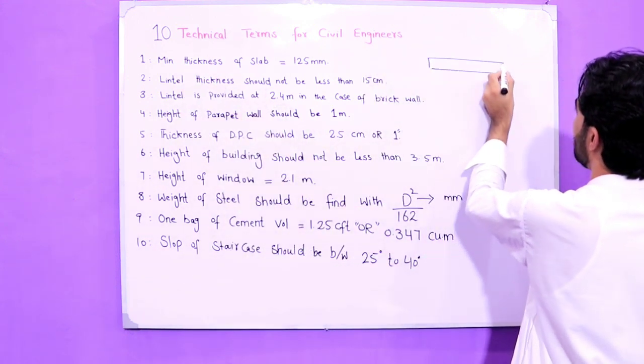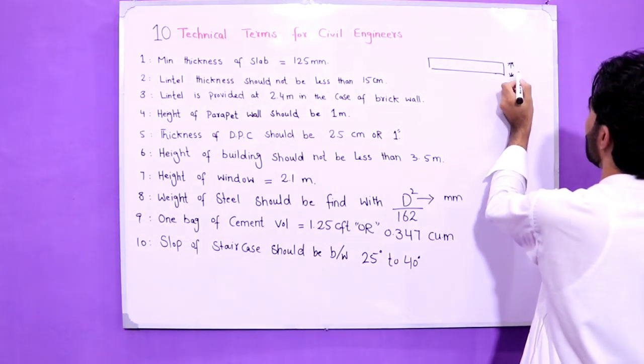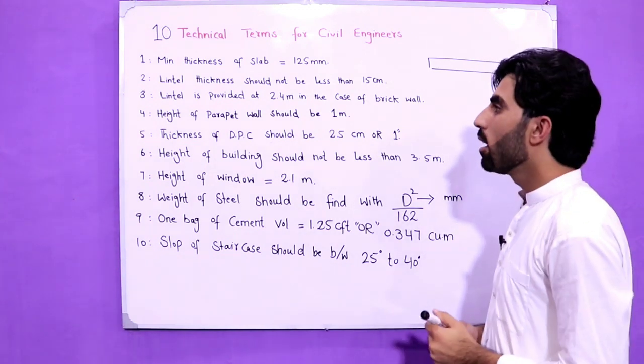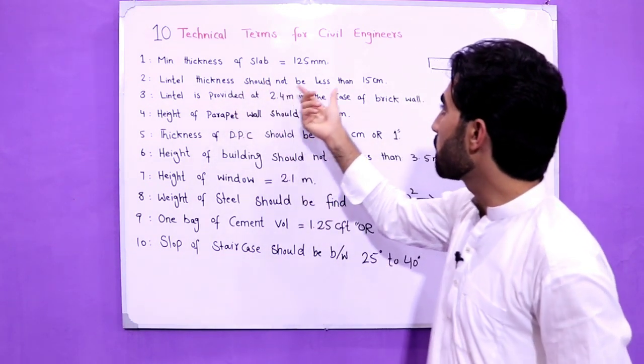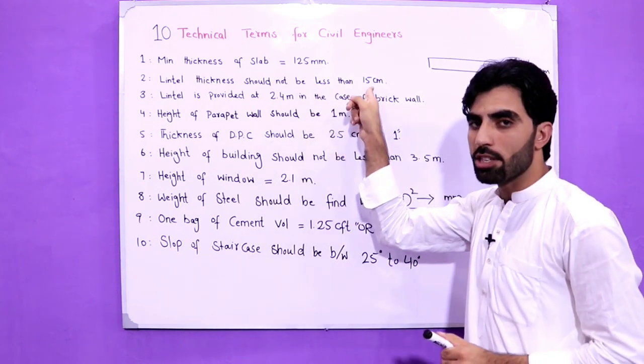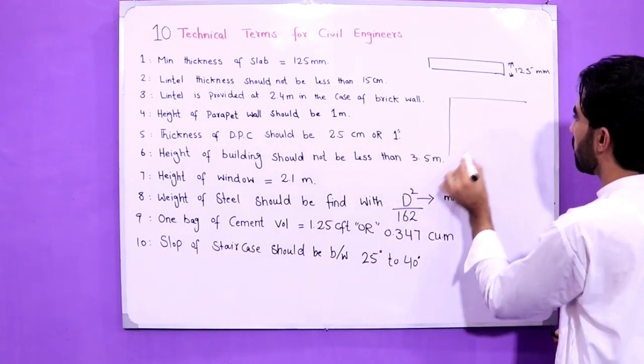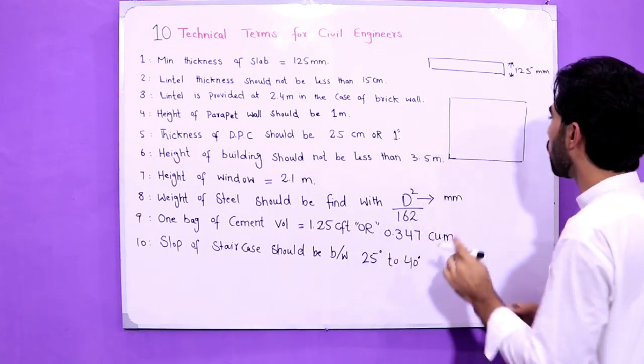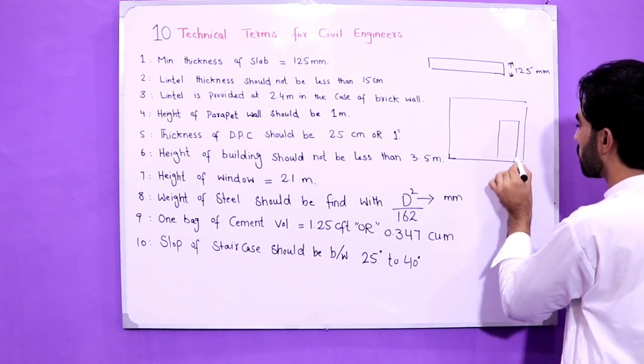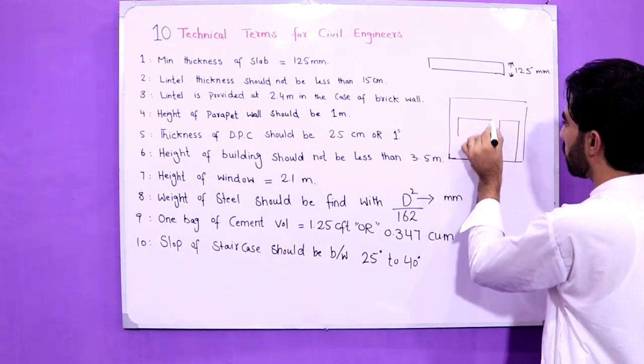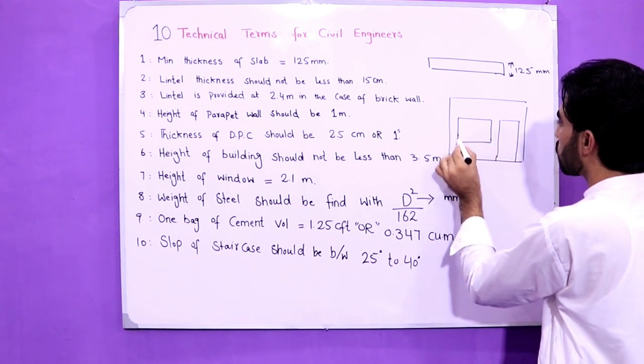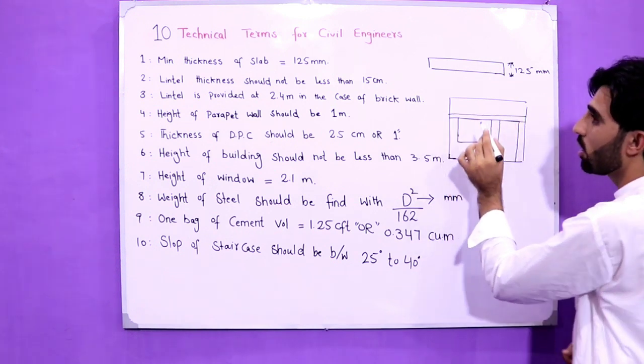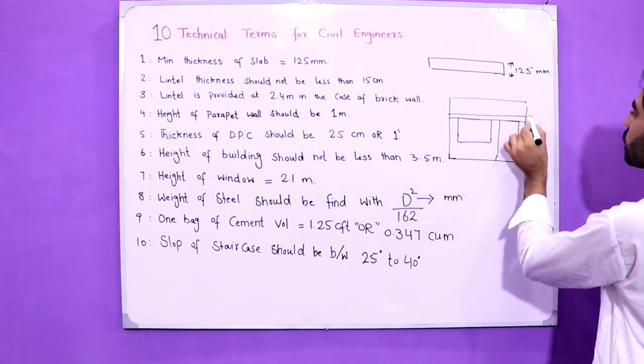The second one is lintel thickness should not be less than 15 centimeters. As you can see guys, this is front wall for slab, for room. As you can see, this is a door and this is window. So guys, we provide here lintel beam. The lintel beam thickness should not be less than 15 centimeters or 6 inches. So this is lintel beam or lintel.